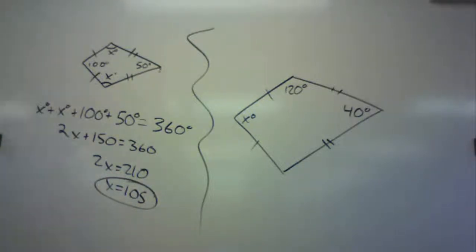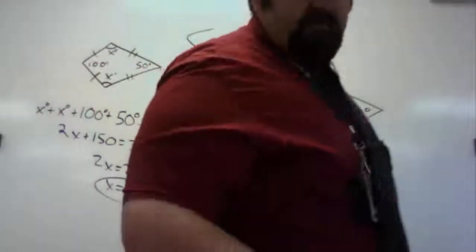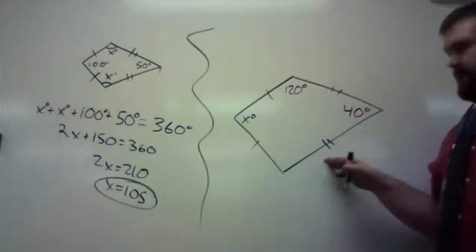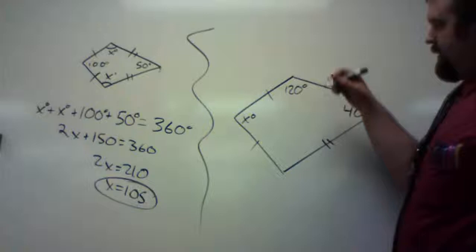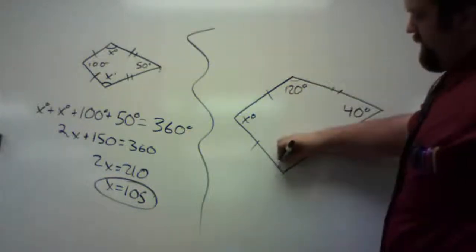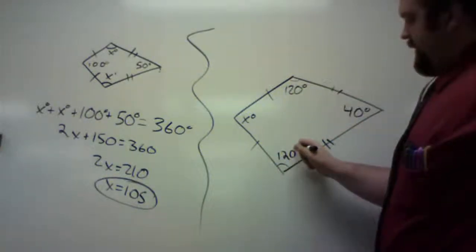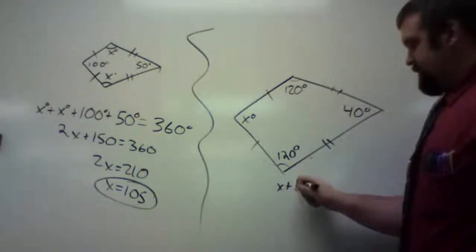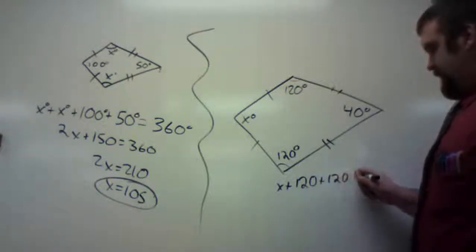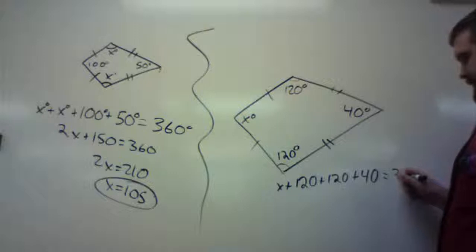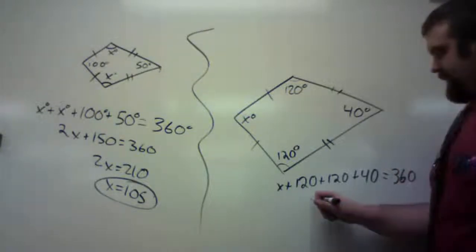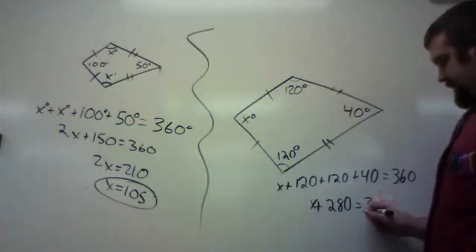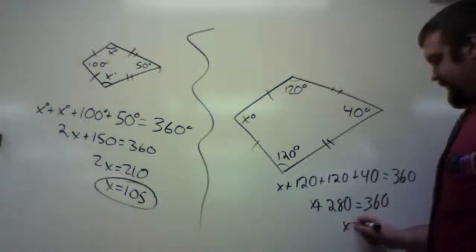The next problem is pretty similar — it's also a kite. I know one pair of angles is congruent, so this angle is also 120 degrees. Adding all four angles to 360: x + 120 + 120 + 40 = 360. Simplifying the left side: x + 280 = 360. Subtract 280 from both sides: x = 80.